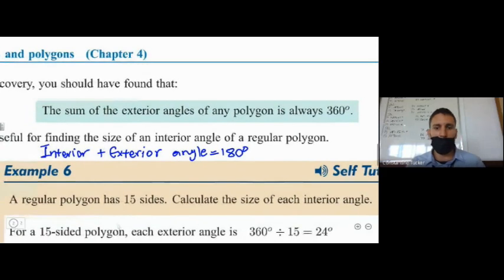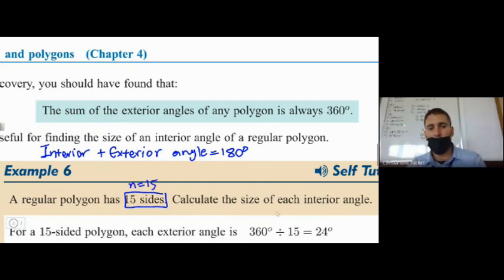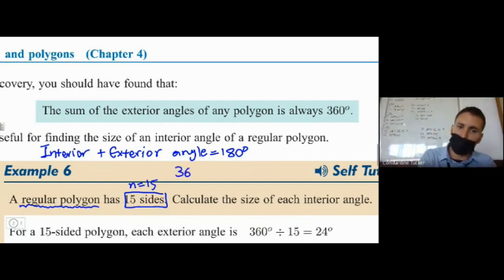Now let's talk about this polygon. A regular polygon has 15 sides. What is the size of each interior angle? Well, we can start with the exterior angle. So this is 15 sides, so n is 15. How do we calculate one of the exterior angles if we know that it's a regular polygon, which means everything is equal to each other? If we do 360 degrees divided by 15, which the textbook has done down there...